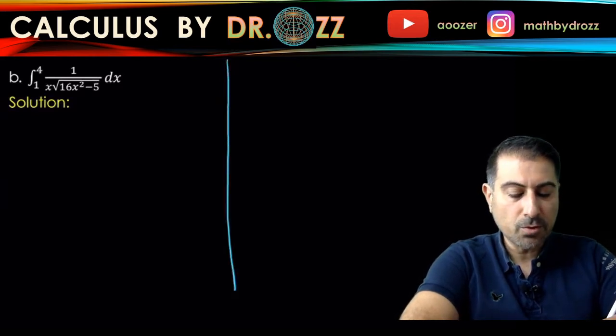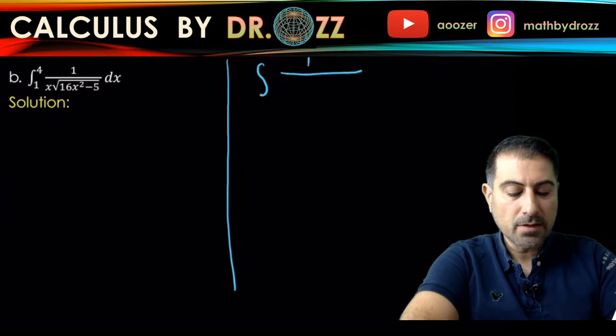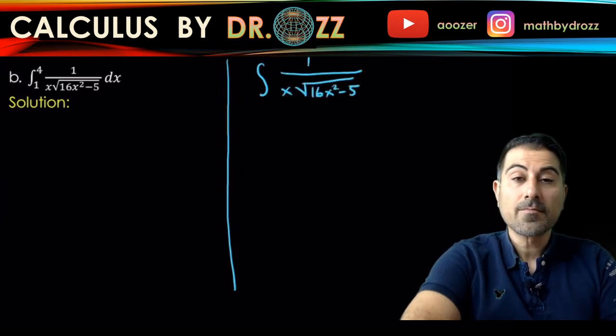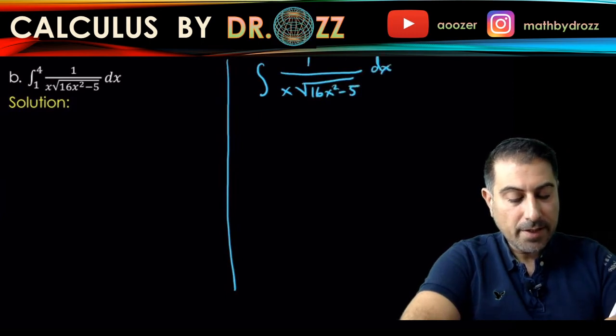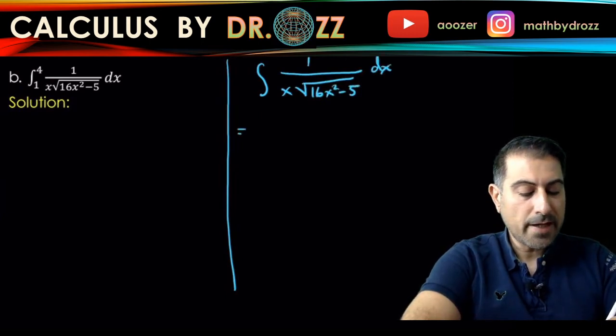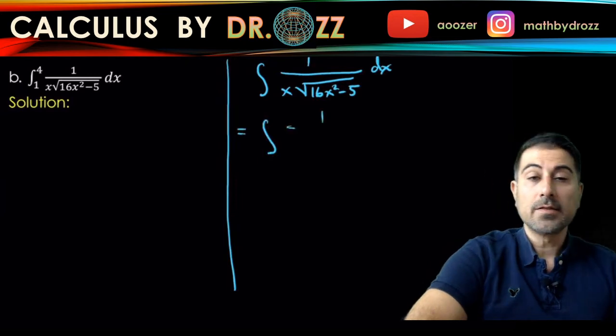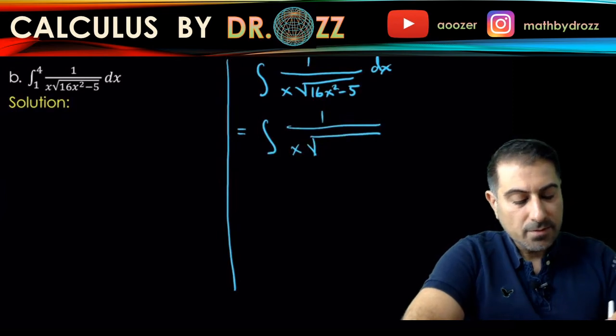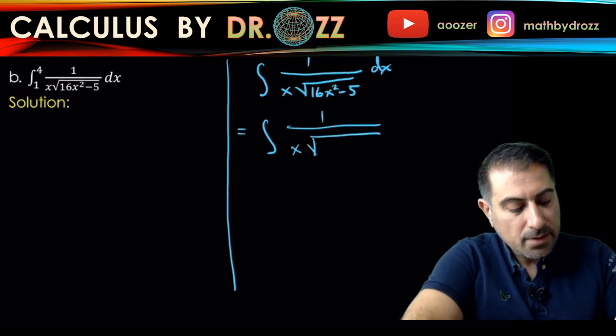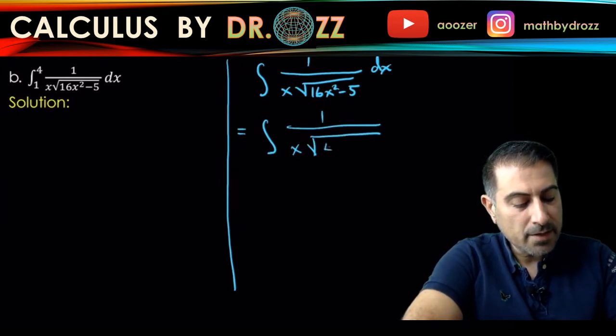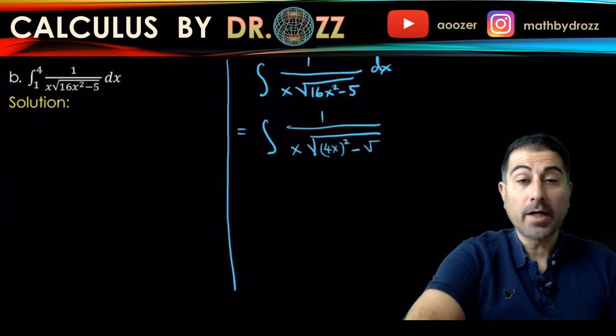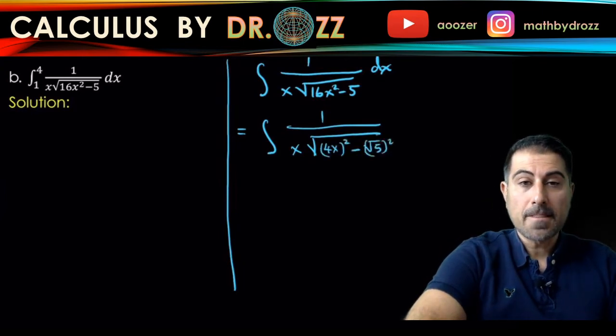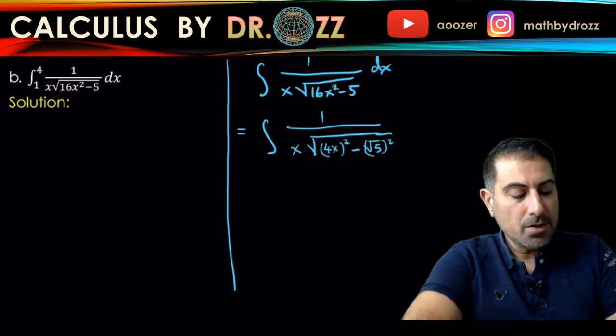Okay, so it's 1 over x√(16x² - 5) dx and I'm going to rewrite this as 1 over x times the difference of squares, right? Because that's what the arc secant form was. So this is (4x)² minus (√5)². Okay, that's our first setup.